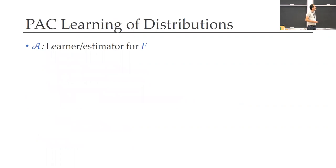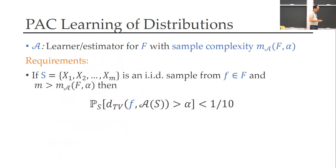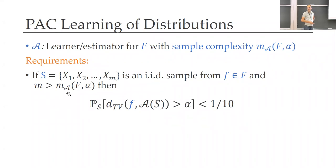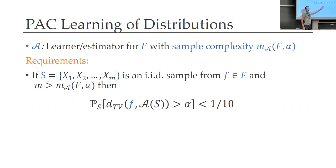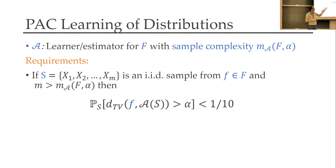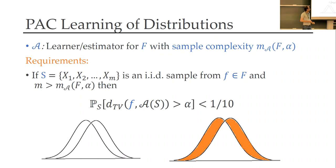To be more specific: we have a learner or estimator for the class. The main requirement is that it receives some sample S from the distribution IID, outputs a distribution as its estimate A(S), and we want the total variation distance between F and A(S) to be smaller than alpha, the accuracy parameter. This should happen with high probability. The total variation distance can be thought of as the L1 distance between density functions — it's a very standard problem in statistics.